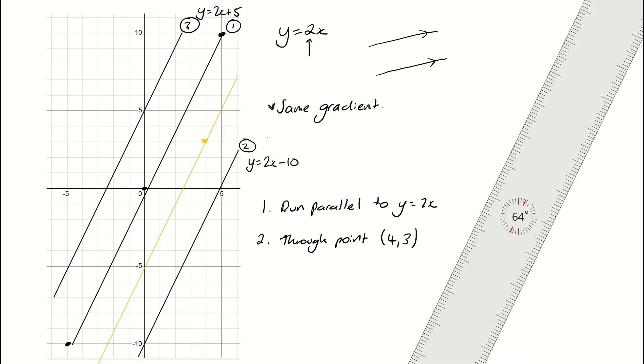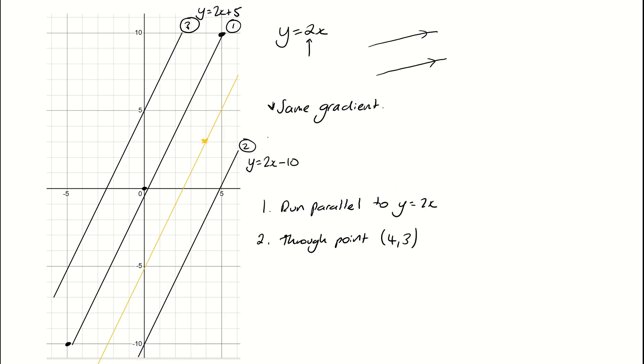So how can I find the equation of that algebraically? Well, I know that the general equation for a linear line is y equals mx plus c. So we're looking for the equation of this yellow one here. But I know what the gradient is. Because it's parallel to y equals 2x, it has to have a gradient of 2. All parallel lines have to share the same gradient. So all that's left for me to do now is find my c value.